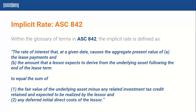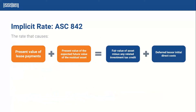To simplify that definition, we've actually created a formula on the next slide to help you. The formula is virtually identical to that definition, but we've got two different sides of the story. In general, taking a step back, this implicit rate — the rate that causes all of this to equal each other — is really just the rate the lessor is charging the lessee.